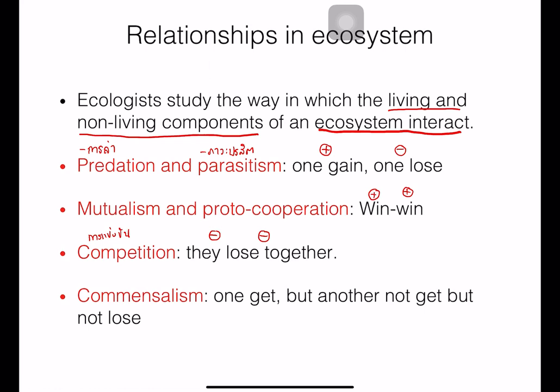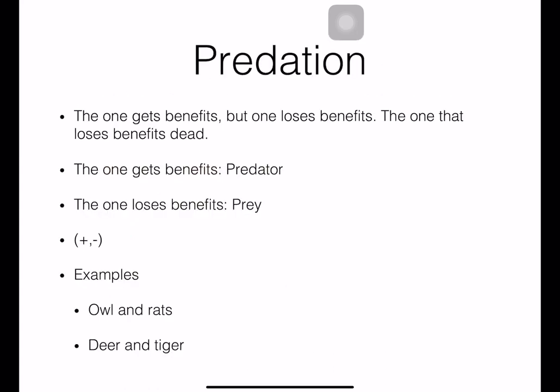Commensalism — one organism gets a benefit but another one does not gain and does not lose, represented as plus and zero. Sometimes, cooperation is removed from the list and combined together with mutualism. So now we combine them together. The first relationship type is predation.